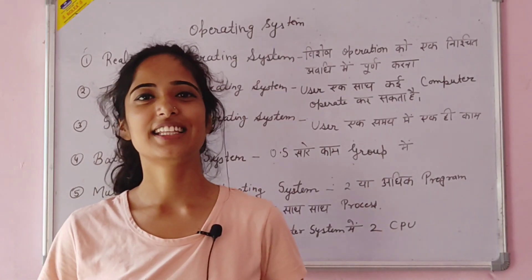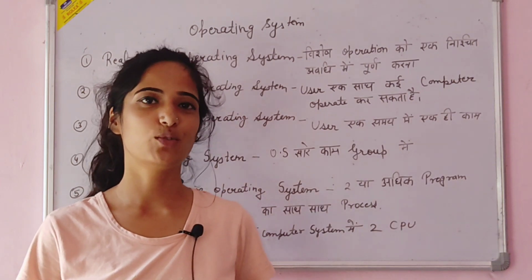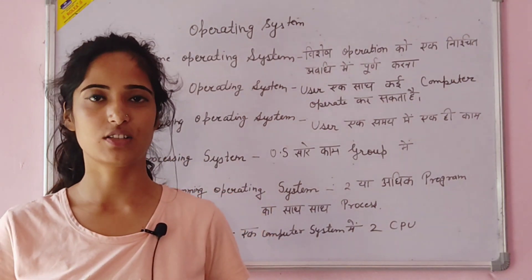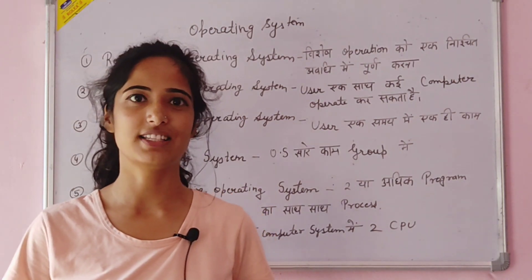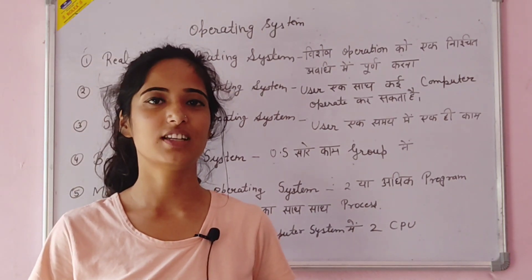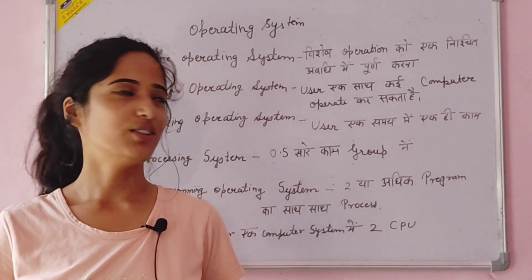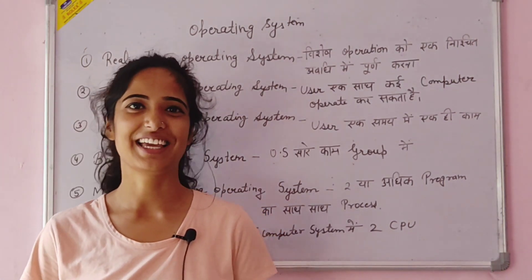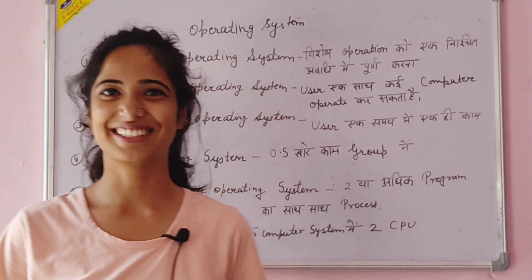These are all types of operating systems covered in the book. In the next video, we will read about Utility Software, Device Driver, and Application Software. Keep watching, see you in the next video. Take care.